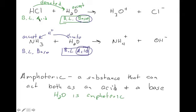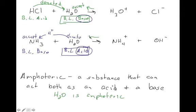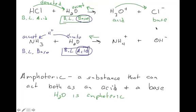These Bronsted-Lowry reactions can also go in the reverse direction. Looking at the right side of the HCl reaction: as H3O⁺ becomes H2O, it gives the H back to Cl⁻ — it's donating, so H3O⁺ is an acid. The Cl⁻ is taking that hydrogen to become HCl, making Cl⁻ a base. We don't call these Bronsted-Lowry acids/bases to avoid confusion — on the right side we call them conjugates. H3O⁺ is the conjugate acid, and Cl⁻ is the conjugate base.